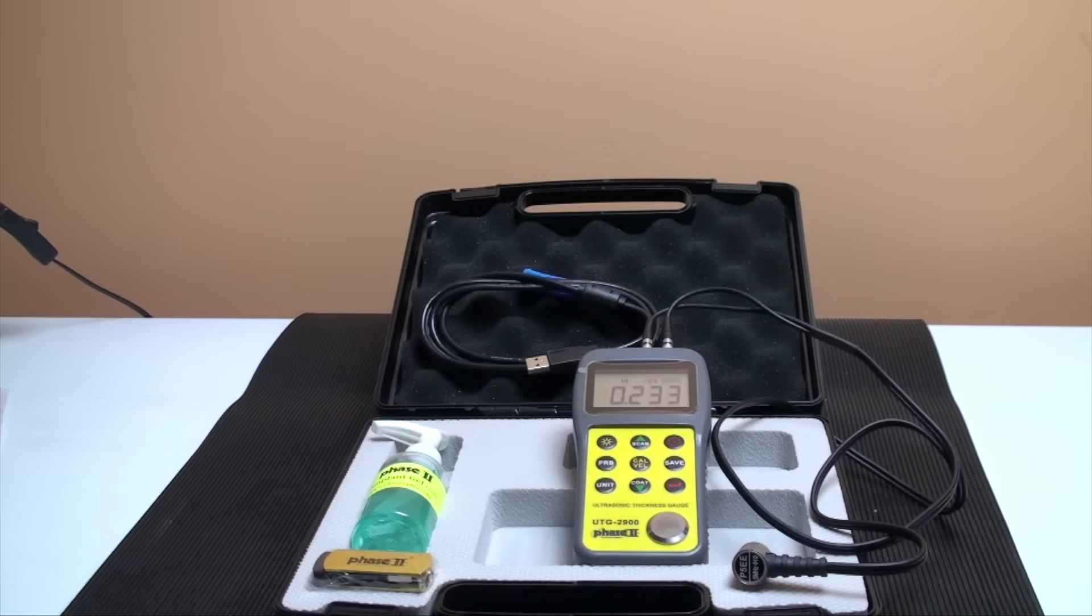This is an instructional video detailing the applications and functions of the Phase 2 UTG-2900 ultrasonic thickness gauge. The UTG-2900 is designed to test metallic and non-metallic materials as long as they have parallel top and bottom surfaces and sound waves can travel through the material. This model also has a through coating function which allows for tests on painted and coated surfaces.